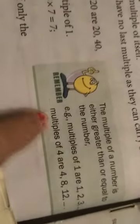Multiples of 1 are 1, 2, 3. Multiples of 4 are 4, 8, 12. So, 4 times 1 is 4, 4 times 2 is 8, 4 times 3 is 12. Like that, it will go on.